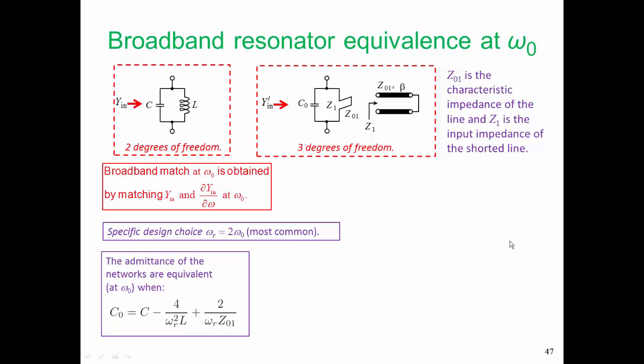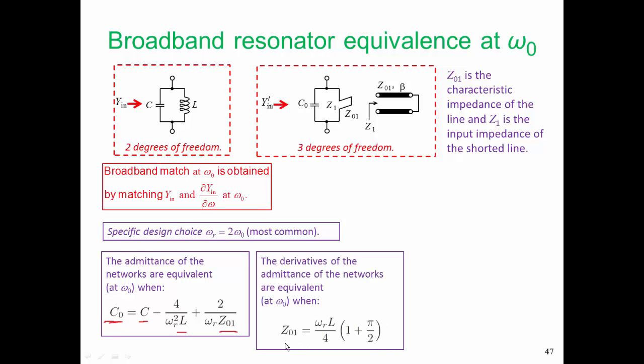For the admittances of the networks to be equivalent, this is the value that we need for C0. You'll see C0 is a function of C and L and Z01. So let's say we got the value of Z01 wrong. That would mean that we'd have to change the value of C0 to ensure that the admittances are equivalent. And when we equate the derivatives, we end up becoming a little bit more restrictive. So Z01 is now a function of L. Here's L on its own. Here's C, so it is fixed. And so C0 is fixed. In fact, the only variable in here that we can play around with is this commensurate frequency. So we could change that commensurate frequency if we wanted to, and we'd have a different value of capacitor. Still, the most common choice is for the commensurate frequency to be twice the center frequency of the filter.